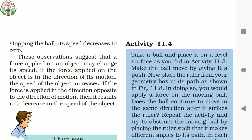From this observation, we can conclude that a force applied on an object may change its speed. If the force applied on the object is in the direction of its motion, the speed of the object increases. If the force is applied in the direction opposite to the direction of motion, then it results in a decrease in the speed of the object. This means a force can either increase or decrease the speed of an object.